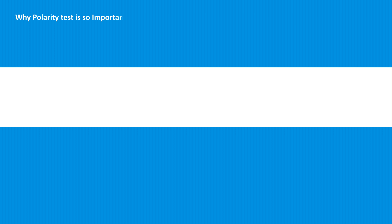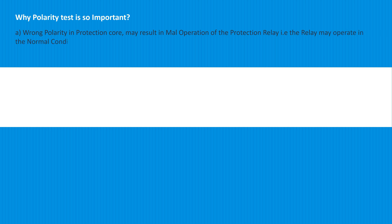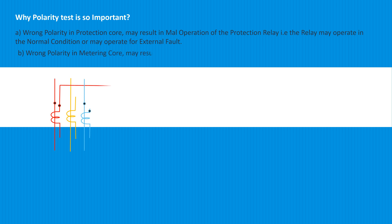Why is the polarity test important? Wrong polarity in a protection core may result in mal-operation of the protection relay — that is, the relay may operate in normal condition or may operate for an external fault. Wrong polarity in the metering core results in wrong metering.